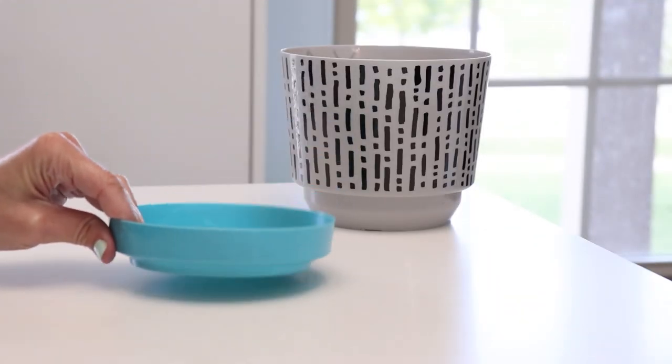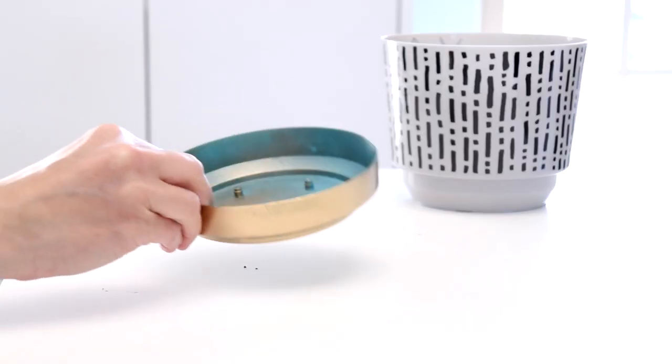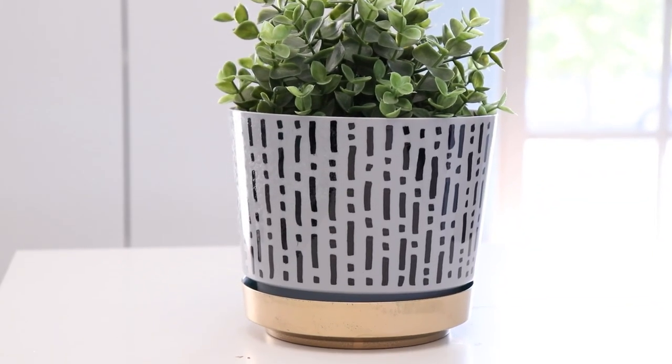To add a little interest I'm going to paint the blue base a metallic gold color and pair that with this kind of boho abstract planter. Together they look amazing and again this one can be used indoor or outdoor.